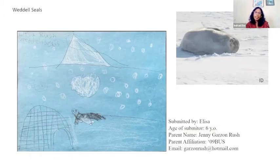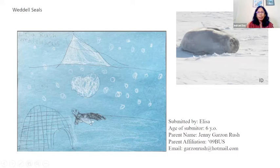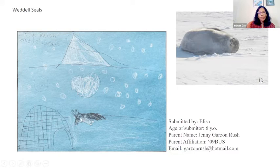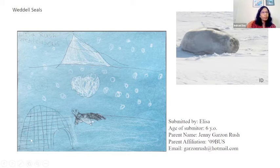And then Elisa sent us Weddell seals. I'm pretty sure she wanted to draw this baby seal, and she knows that this baby seal was three days old when I photographed it and is probably almost four years old now. Because it was a baby, Elisa provided the baby Weddell seal with a toy — that's very nice of you, Elisa. I love this picture. And then there are icebergs — she also provided a home for the baby seal.